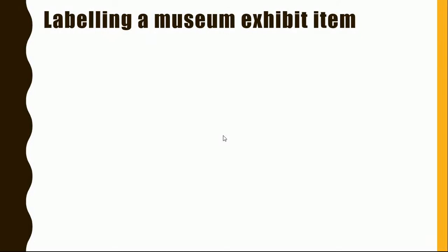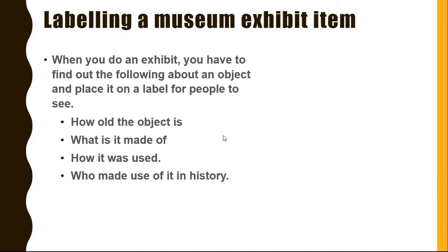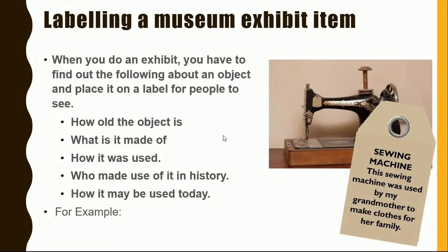Labelling a museum exhibit item. When you do an exhibit, you have to find out the following about an object and place it on a label for people to see: how old the object is, what it is made of, how it is used, who made use of it in history, and how it may be used today. For example, here we have a sewing machine. This sewing machine was used by my grandmother to make clothes for her family.